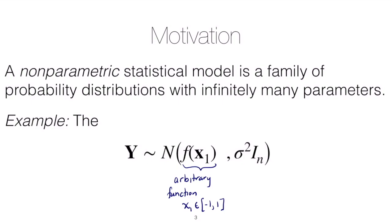We would need an infinite number of parameters to specify exactly what this function would be. The typical situation in statistical modeling is that there's something we don't know and are trying to estimate. So if we really don't know the functional form at all and we're trying to estimate it, we would need infinite data — which we don't have. This is an example of a non-parametric model.